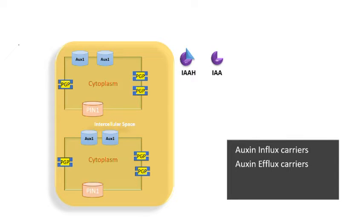There are also auxin efflux carriers named PIN - PIN-formed proteins, the PIN1 family proteins. There is another auxin efflux carrier besides PIN, which is PGP - P-glycoprotein. P-glycoproteins are located on the lateral side, while PIN is located at the vertical positions of the cell.